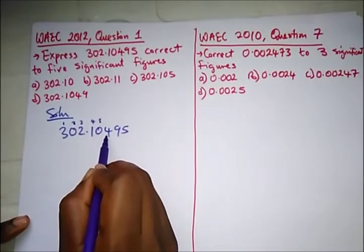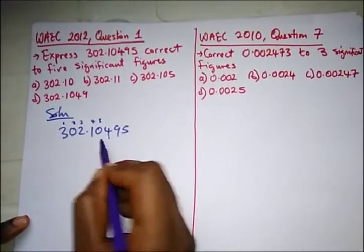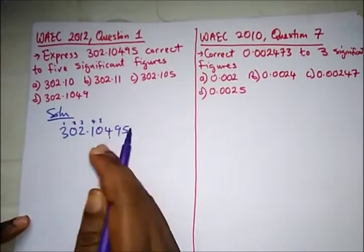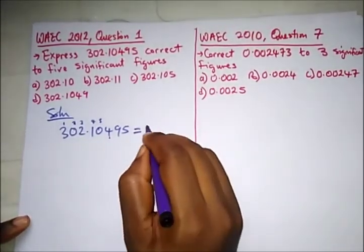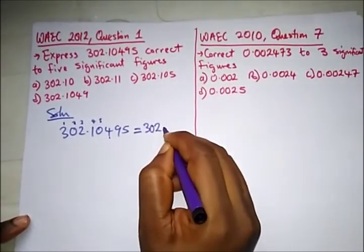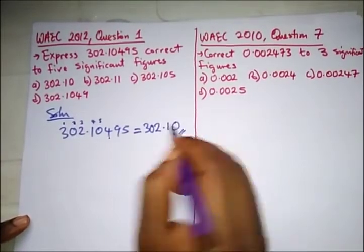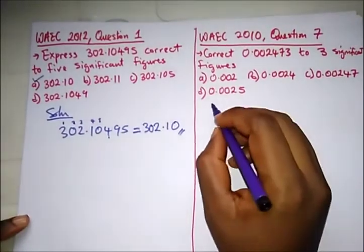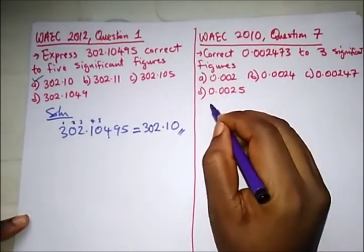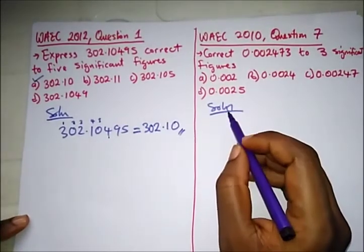What's the next value after the fifth significant figure? Four — can four be rounded up or rounded down? It can't be rounded up, so it's rounded down. We just cancel the remaining digits. Our correct answer is 302.10, and that's option A.